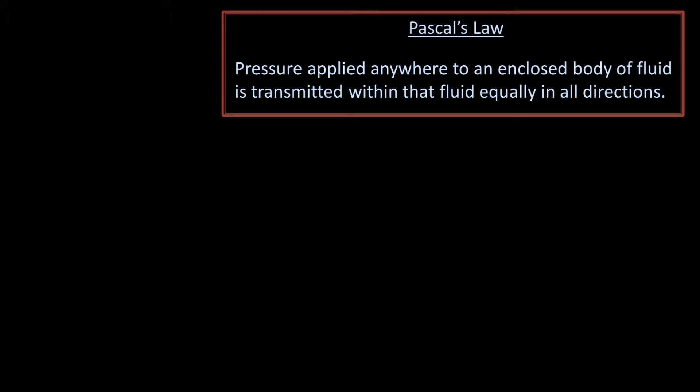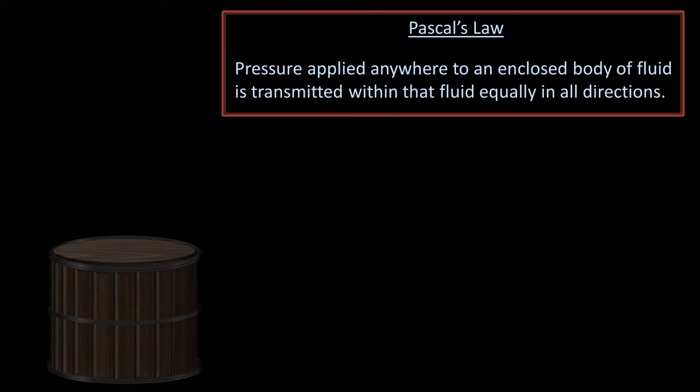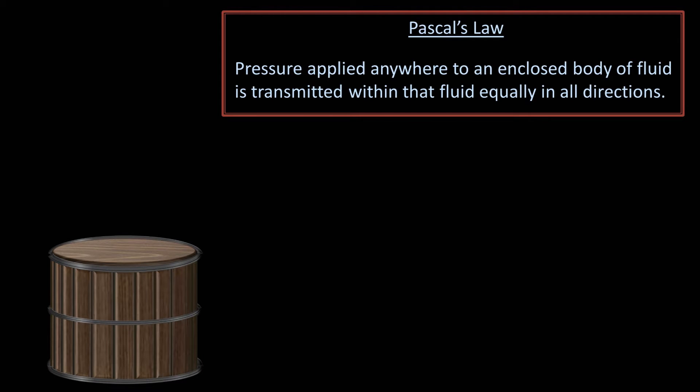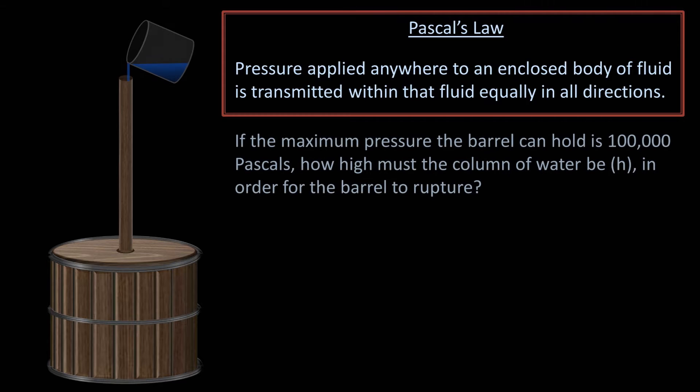This is an extension from lesson number three on hydrostatic pressure. Explaining it further will be much easier with a few examples. First, imagine we have a wooden barrel full of water. A vertical tube is inserted into the lid. If the maximum pressure the barrel can hold is 100,000 pascals, how high must the column of water be in order for the barrel to rupture?